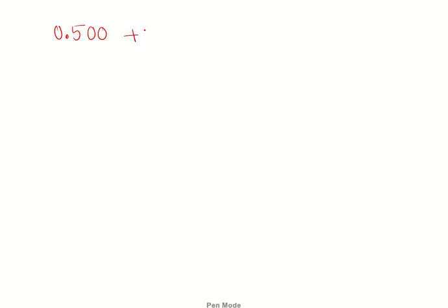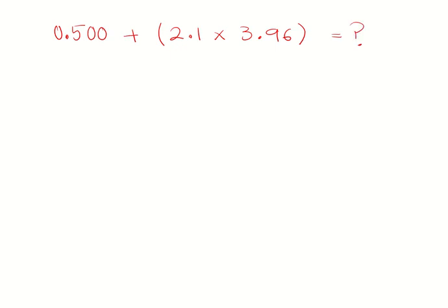Now I'll give you an example to try: 0.5000 + (2.1 × 3.96). Calculate and report your answer with proper sig figs. Whenever we ask 'what is the answer,' it means you need to apply sig fig rules. Please watch the video, calculate, and then check your answer against mine.